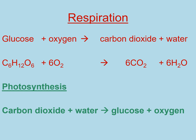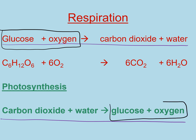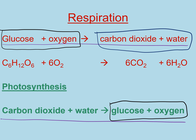So why have I talked about the photosynthesis equation when we're doing respiration today? Well, photosynthesis and respiration are basically the same things but backwards. With respiration, we start off with glucose and oxygen, and with photosynthesis, we end with glucose and oxygen. In respiration, we end with carbon dioxide and water, and in photosynthesis, we begin with carbon dioxide and water. So the products and the reactants are swapped around when you look at respiration and photosynthesis.